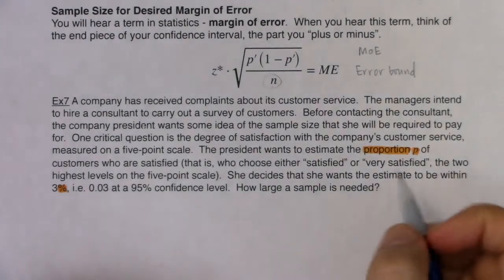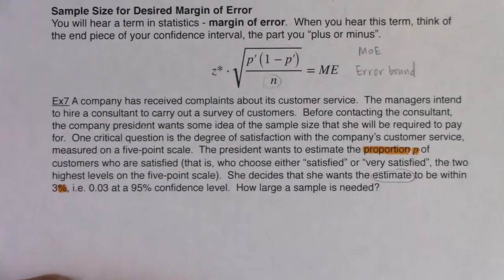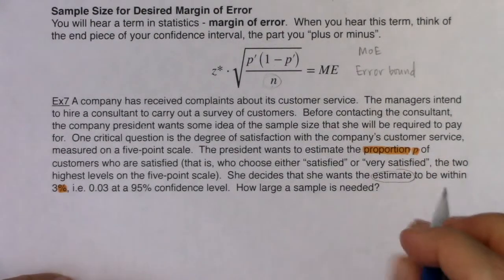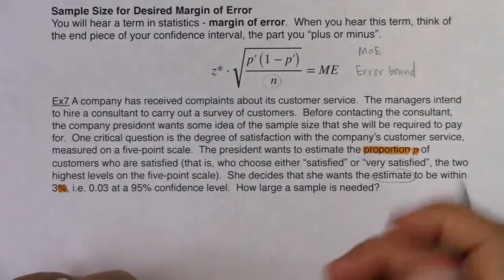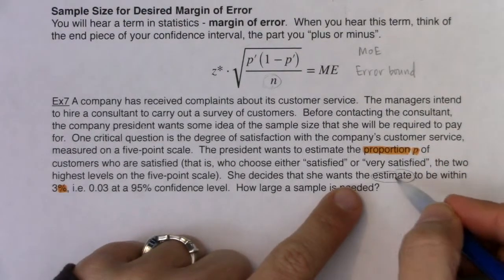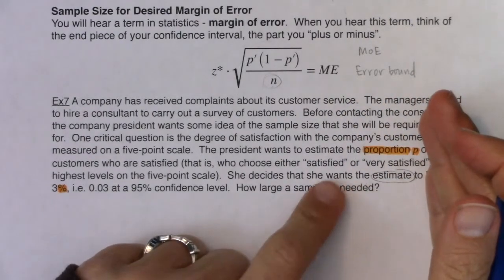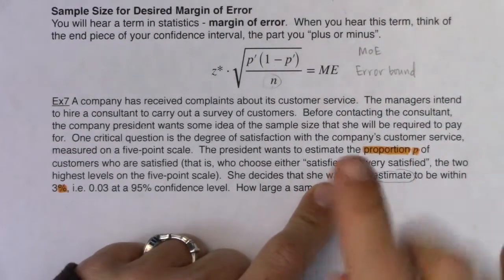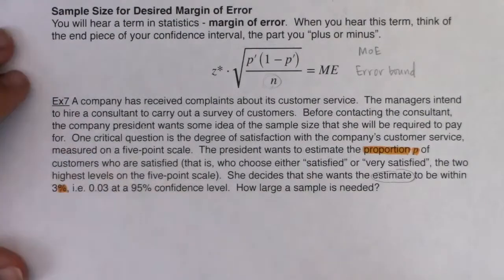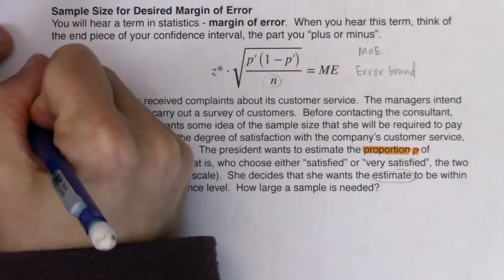I want us to start to connect these ideas. When you hear the word estimate, that's another vocab term for a confidence interval. Estimate and confidence interval go hand in hand — an interval estimate, a range of numbers, is a confidence interval. A point estimate, which is just one number, is a statistic. So all this aside, we know we're in proportion land.